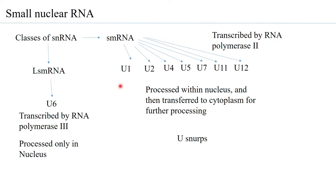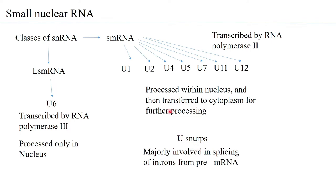These form complexes with proteins to form USNRPs — small nuclear RNA ribonucleoproteins — and majorly all of them are involved in splicing of introns from the pre-mRNA, except for U7. U7 is specifically involved only in the processing of the pre-mRNA of the histones.